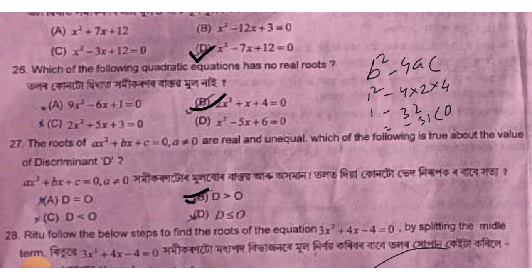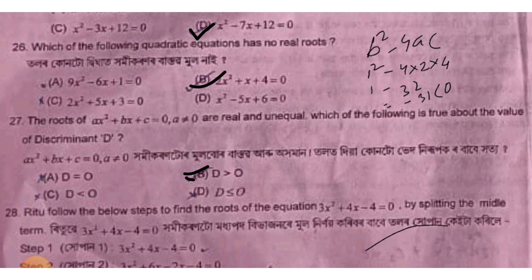Next question: For ax squared plus bx plus c = 0 where a does not equal 0, the discriminant determines nature of roots. If discriminant greater than 0, real and distinct roots. Solving 3x squared plus 4x minus 4 = 0: factoring as 3x squared plus 6x minus 2x minus 4 = 0.